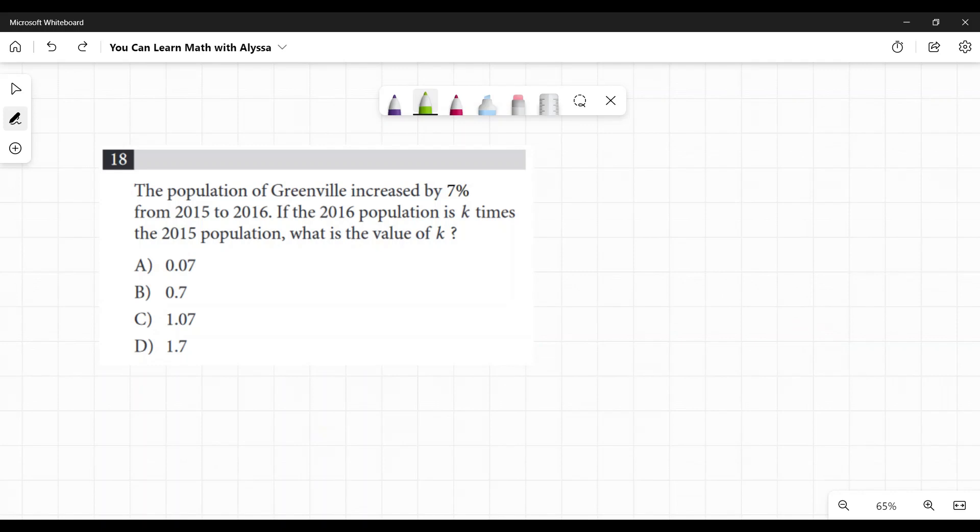So a lot of this, the 2015-2016 population, it's a lot of words that don't really mean a lot in the context. The question that they're asking is, if I have a number and then I want to increase that number by 7%, what do I multiply it by? What am I multiplying it by to get to this new number?